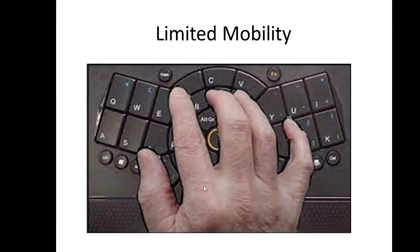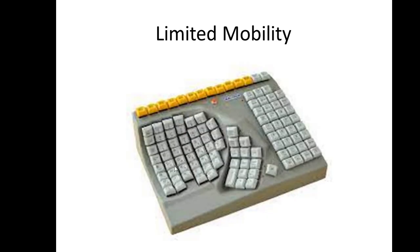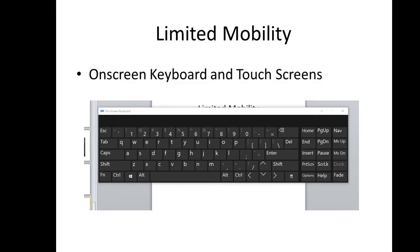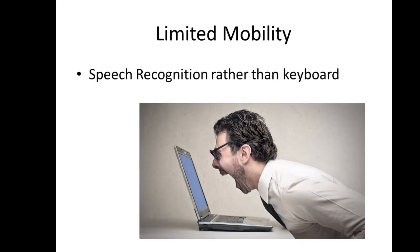Here is an example of a keyboard used for one hand — if you are single-handed, you can make use of this keyboard. Here is another example of a single-hand keyboard. If you cannot use a standard keyboard because you have just one hand or incomplete fingers, you can make use of the on-screen keyboard and touch screens. On-screen keyboard is also one of the utilities inside Microsoft Windows. We can also make use of speech recognition rather than the keyboard for limited mobility.